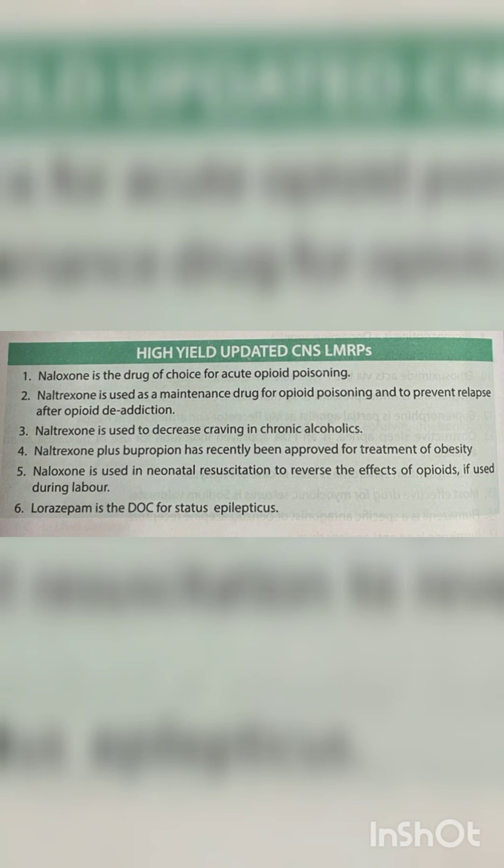Naloxone is the drug of choice for acute opioid poisoning. Naltrexone is used as a maintenance drug for opioid poisoning and to prevent relapse after opioid de-addiction. Naltrexone is used to decrease craving in chronic alcoholics. Naltrexone plus bupropion has recently been approved for treatment of obesity. Naloxone is used in neonatal resuscitation to reverse the effects of opioids if used during labor.